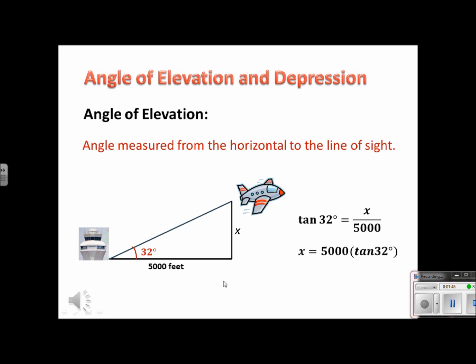And then to solve for this, we would multiply both sides by 5,000 to get that x by itself. And after putting that in your calculator, you would have 3,124 feet. So this airplane would be 3,124 feet from the ground.